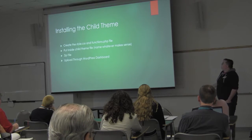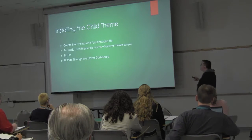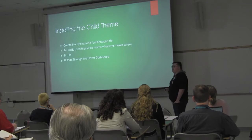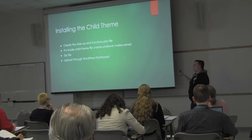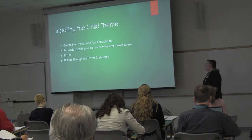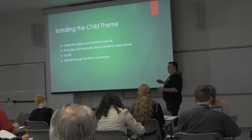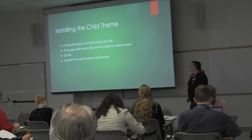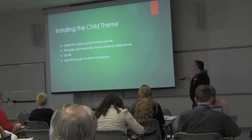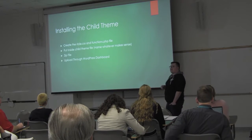So, installing the child theme. The first thing you do is create the style.css and functions.php files. The easiest way is to copy those directly from the WordPress codex — the exact thing is in there and you just fill in whatever name you want. Then you put those inside a directory on your computer, name it whatever makes sense so you remember what your theme file is, zip that up, and upload it to the WordPress dashboard just like any other theme.